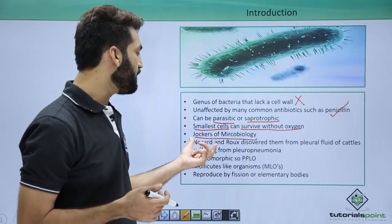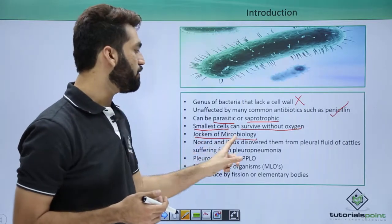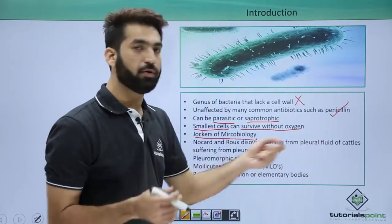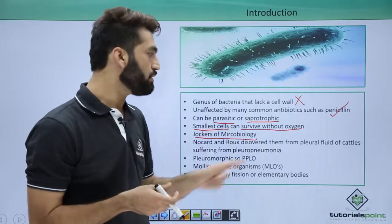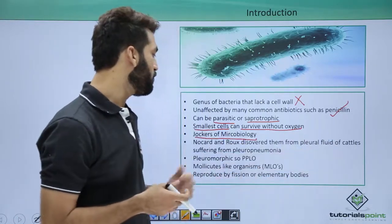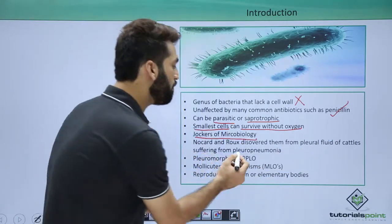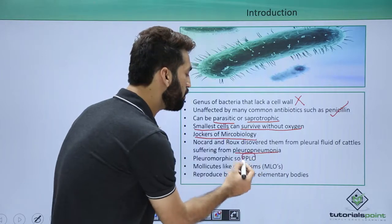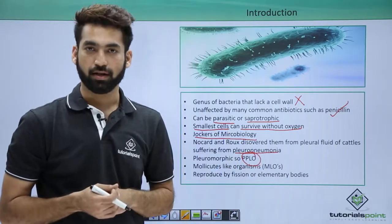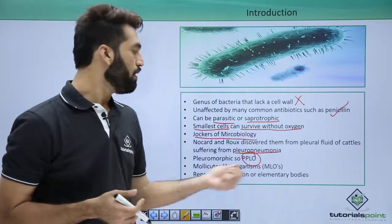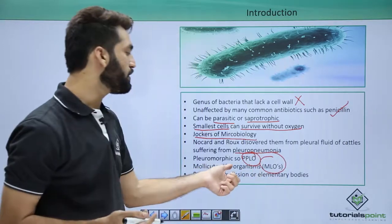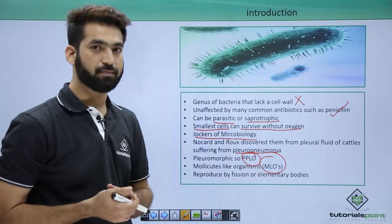Two important scientists, Nockard and Rauch, discovered them from the pleural fluid — the fluid present in the lungs — of cattle suffering from pleuropneumonia. So they are also called pleuropneumonia-like organisms, or PPLO, which stands for pleuropneumonia-like organisms.